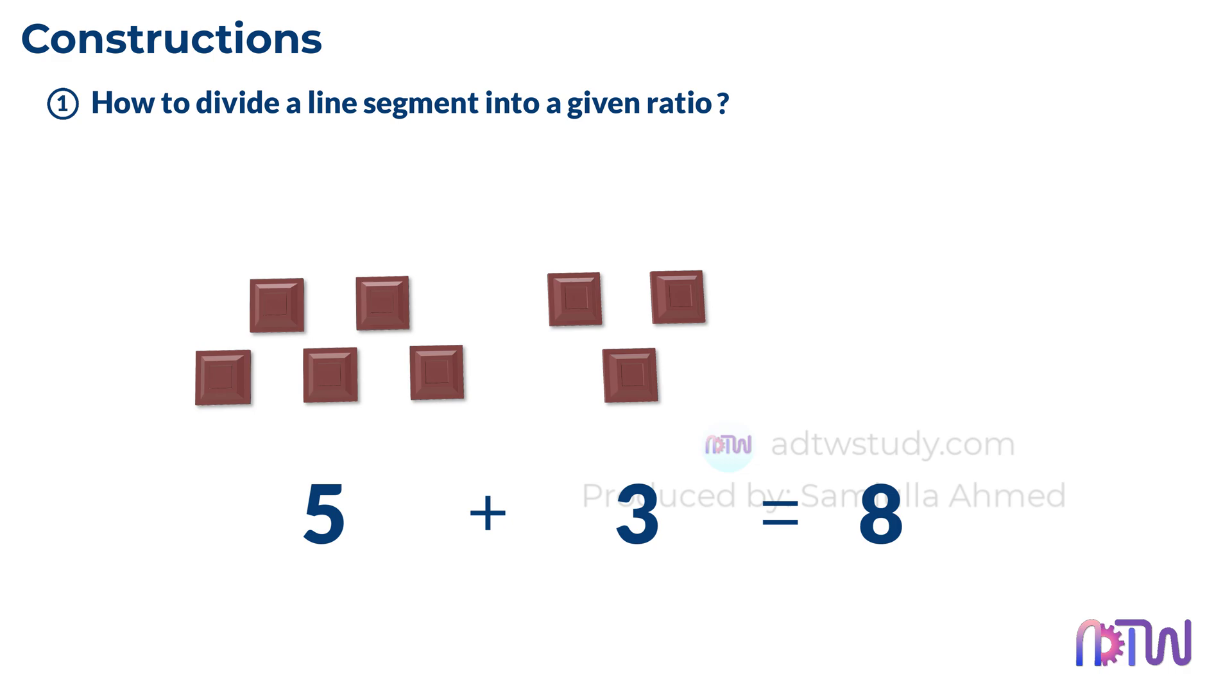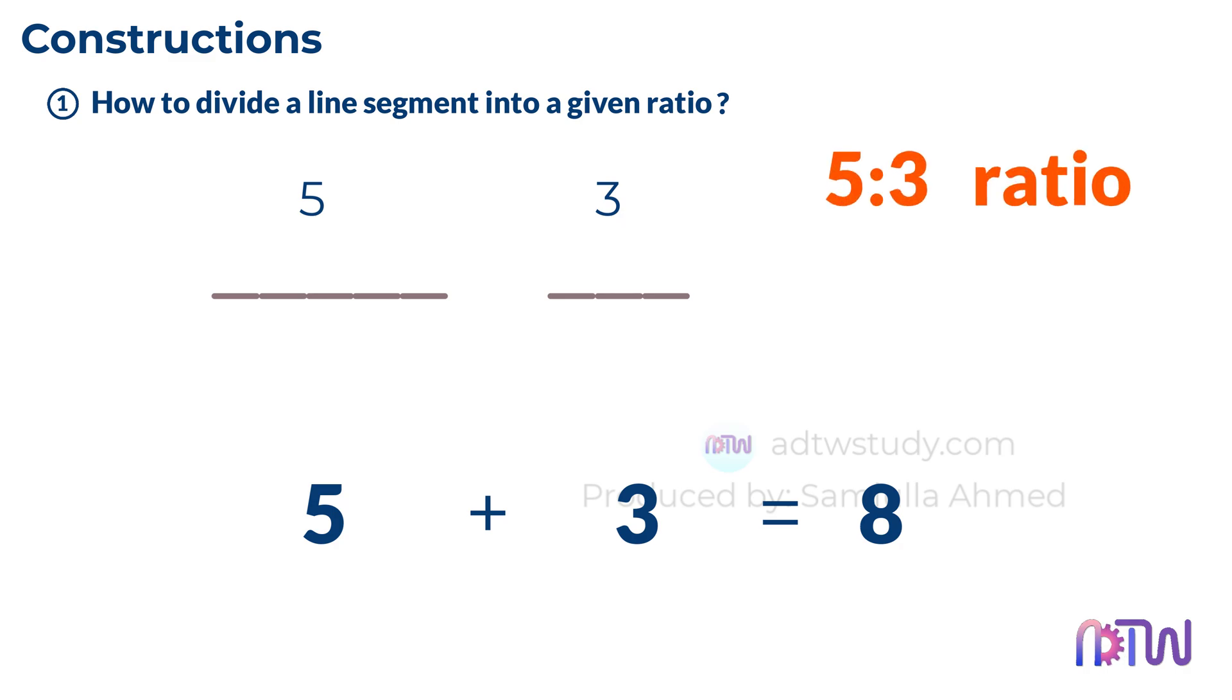Now if you take a long line instead of a chocolate bar and you want to divide this line in a similar way, five parts for one friend and three parts for the other, that's what we call dividing a line in a 5 to 3 ratio. This means the line will be split into eight equal sections, and one part will be five sections long while the other will be three sections long. That's the simple idea of dividing in a ratio like 5 to 3: one part is bigger than the other, but both parts are connected to the total size of the line.